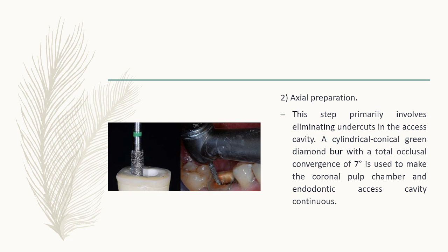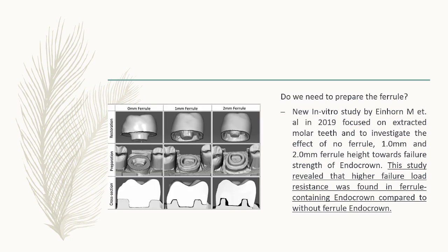For axial preparation, we eliminate any undercuts in the access cavity using a cylindrical conical green diamond bur with a total occlusal convergence of 7 degrees, making the coronal pulp chamber and endodontic access cavity continuous. Regarding whether to prepare a ferrule: a study by Einhorn 2019, focused on extracted molar teeth, investigated the effect of no ferrule versus 1.0 mm and 2.0 mm ferrule height on the fracture strength of the endocrown. The study revealed that higher failure load resistance was found in ferrule-containing endocrowns compared to those without, so we prefer to have a ferrule when fabricating an endocrown.